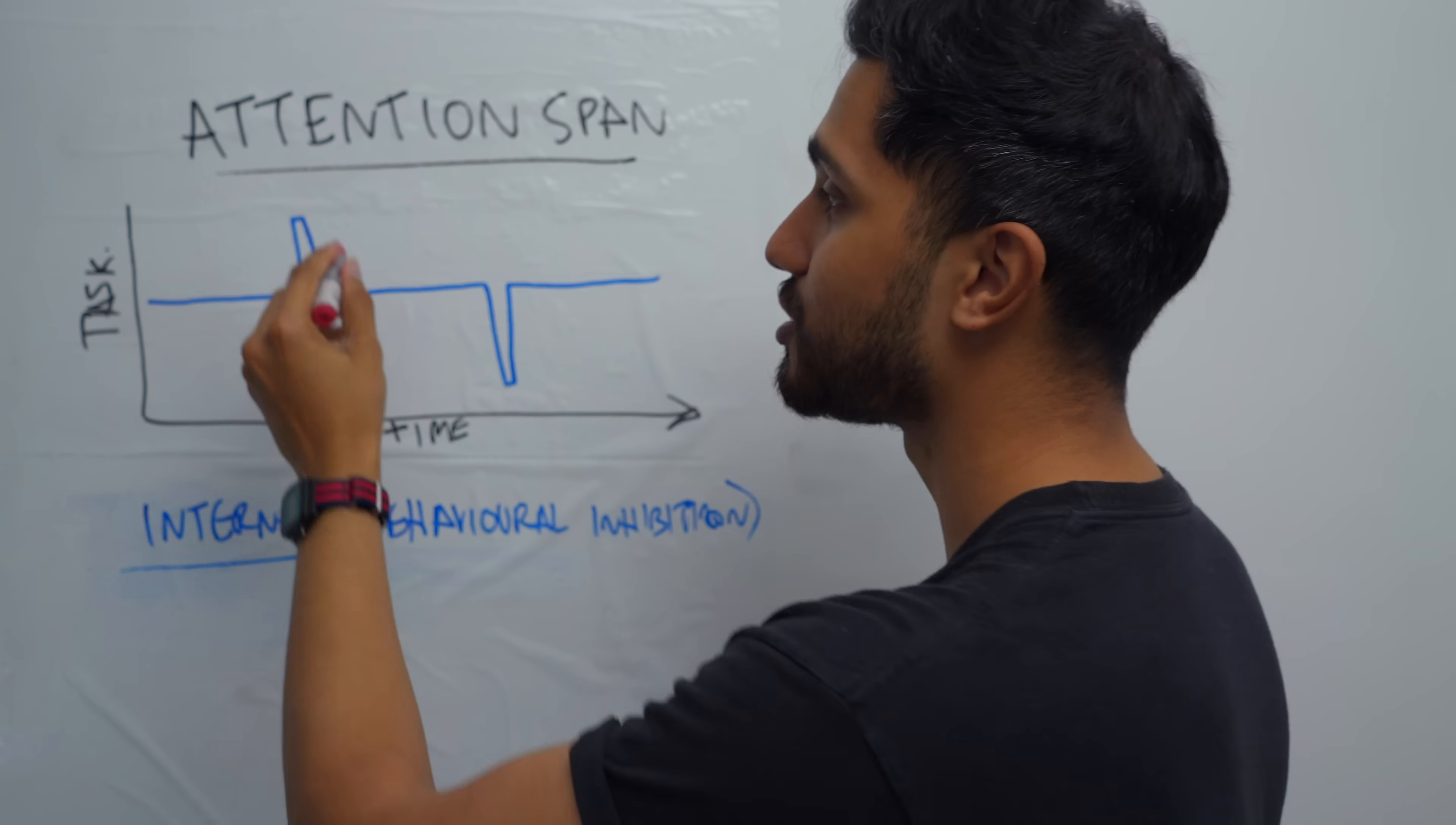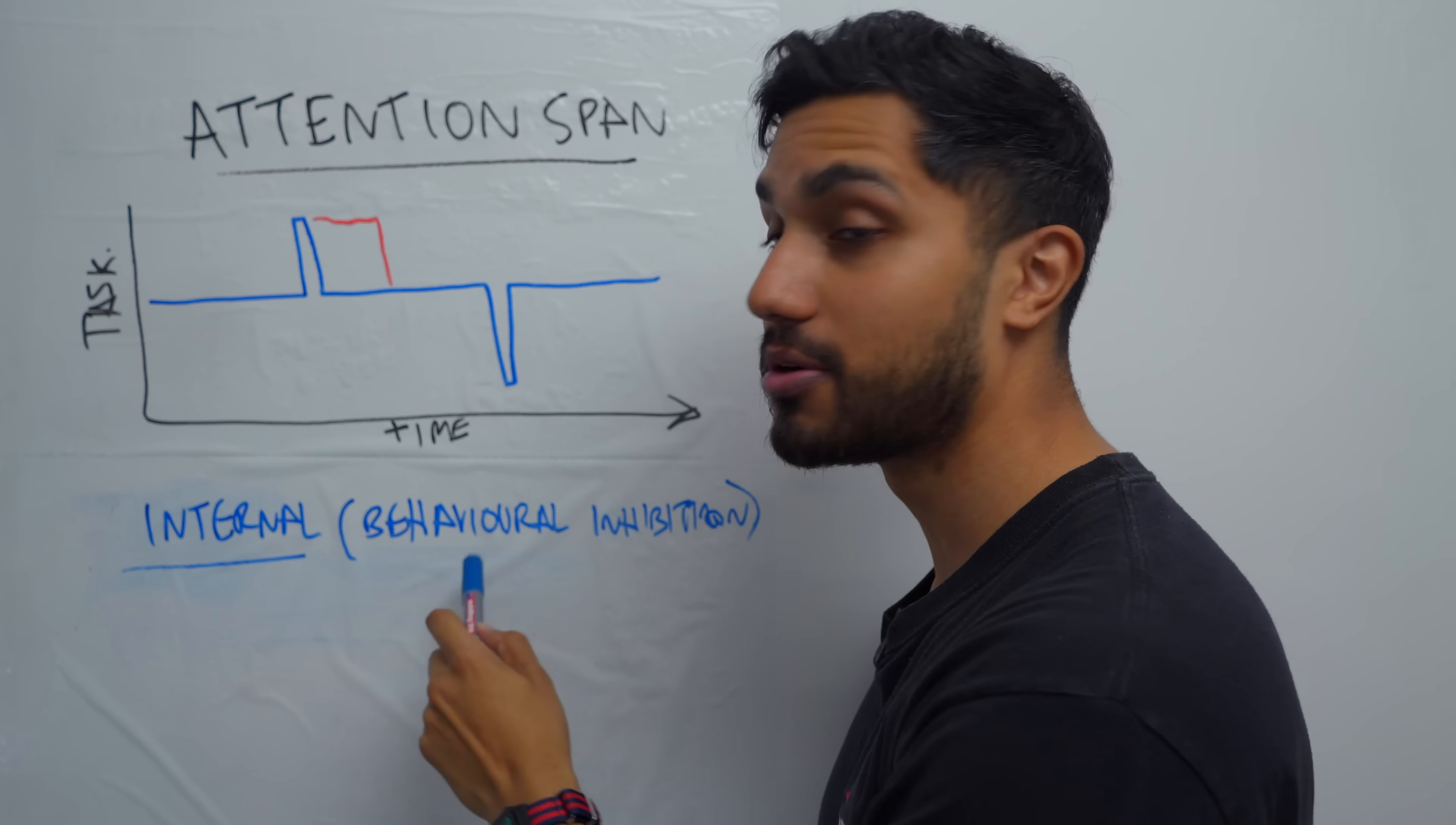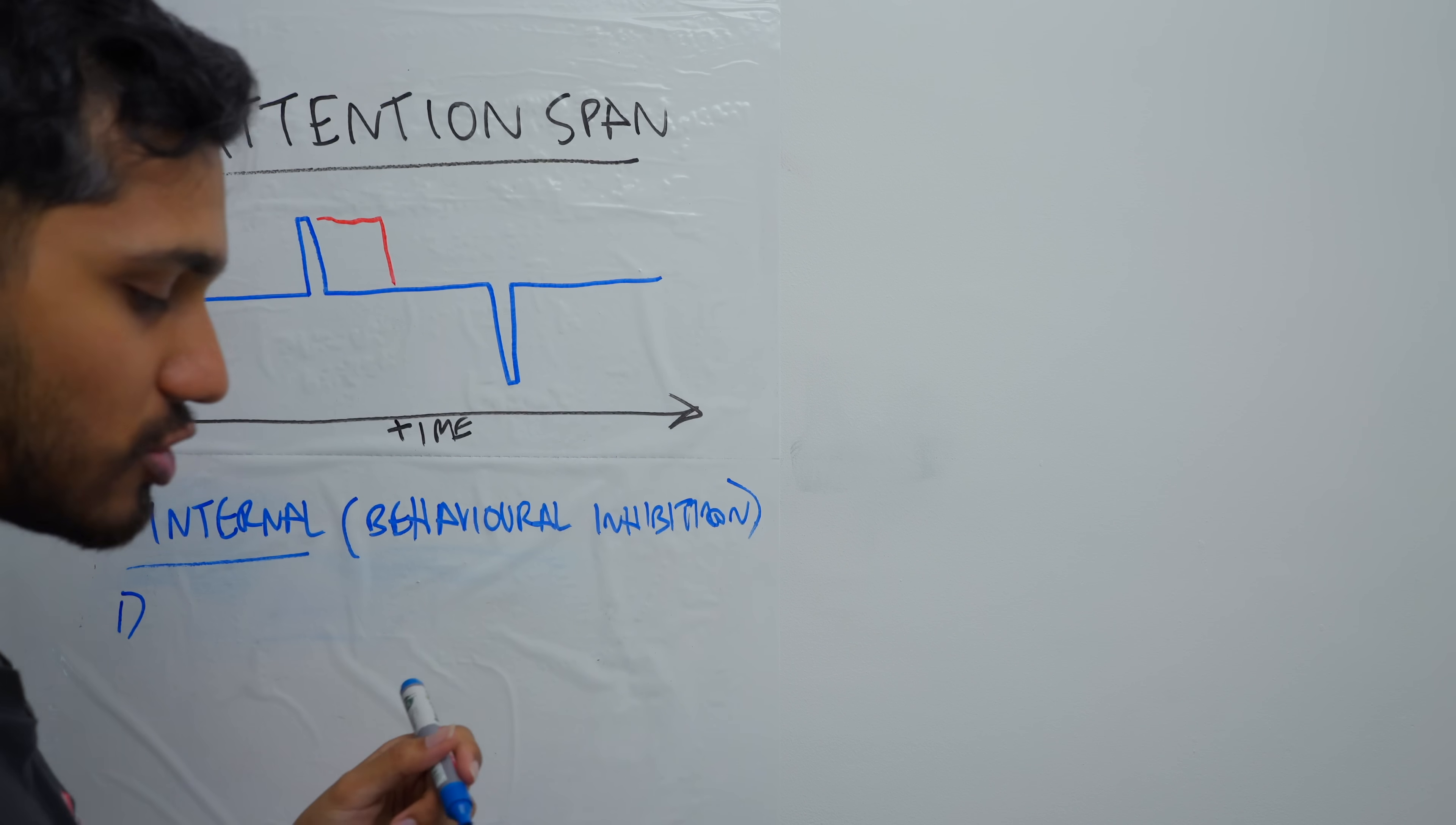And so it's really a matter of how quickly you can get rid of that thought and come back to what you were doing. Because the moment you start letting yourself go into that thought, getting wrapped up in it, then you start acting and then you get distracted for a much, much longer time. And so this is having good behavioral inhibition.